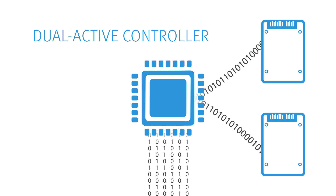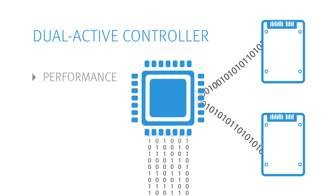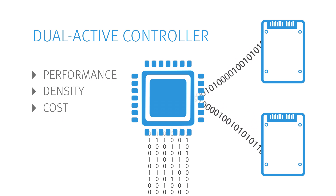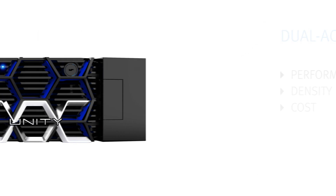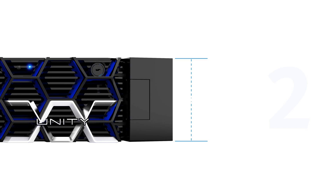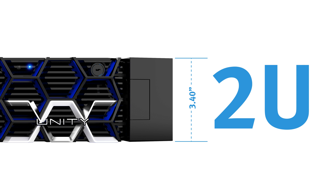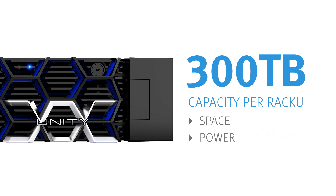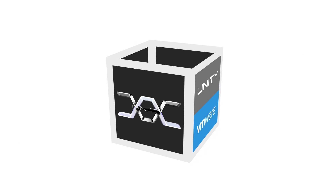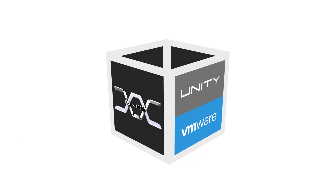Unity is affordable. A dual-active controller system, optimized for the best combination of performance, density, and cost, delivers all-flash at an incredibly low entry-level price. The 2U form factor delivers unified storage capabilities with density greater than 300 terabytes of effective capacity per rack unit, which helps to save space, power, money, and time. Never overspend on storage again.